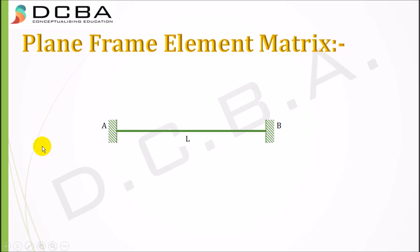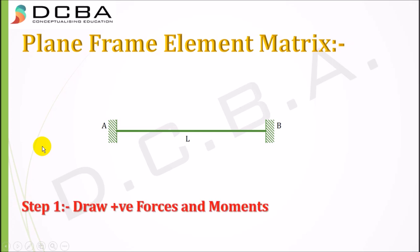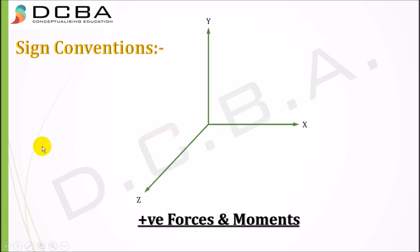Here we have an element with joints A and B. Step 1 is to draw positive forces and moments. Positive forces and moments are those which act along the Cartesian coordinate system — with X, Y, and Z axes. Forces acting along these axes are termed positive forces: force along Y, force along X, force along Z.